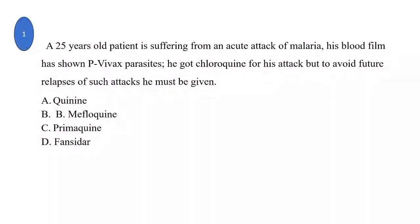Question 1: A 25-year-old patient is suffering from an acute attack of malaria. His blood film has shown P. vivax parasite. He got chloroquine for his attack, but to avoid future relapse of such attack, he must be given: A. Quinine, B. Mefloquine, C. Primaquine, D. Fansidar.